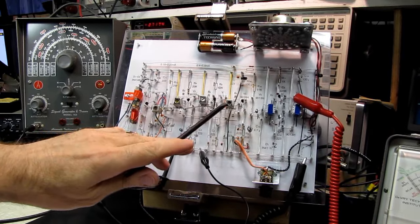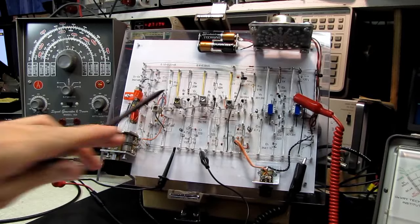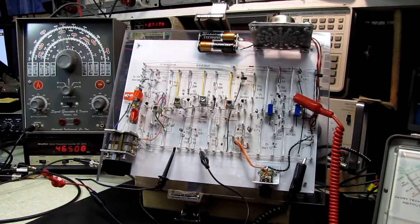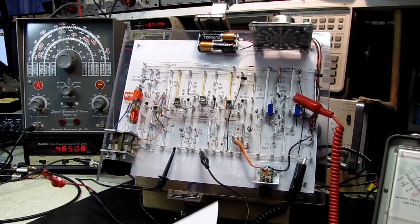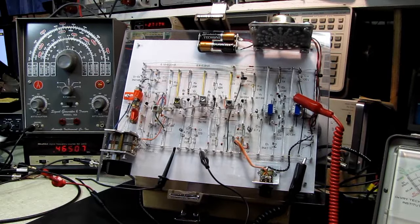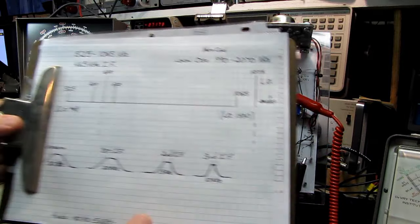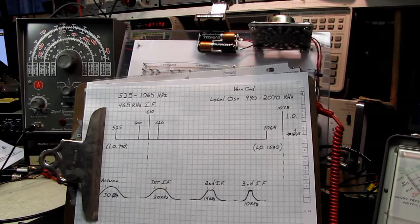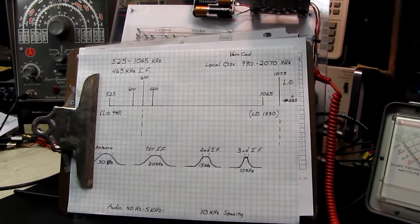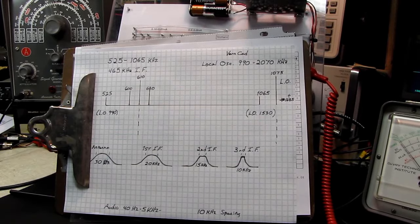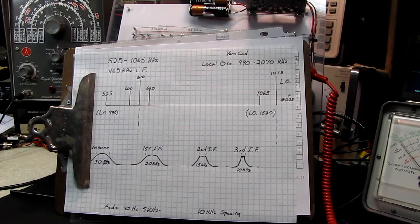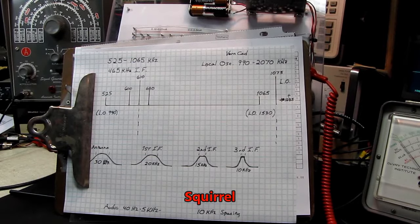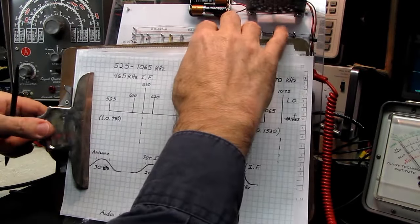We're going to start our alignment with the IF, or intermediate frequency. What you say is the intermediate frequency? Well, in your typical AM receiver, we'll take a look at VernCAD real quick here, and your typical receiver.